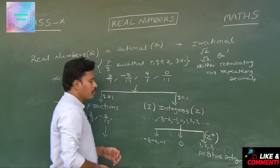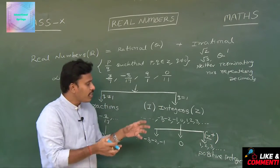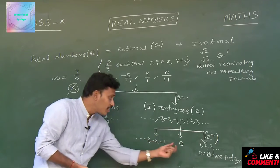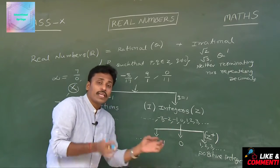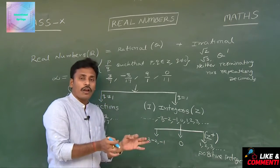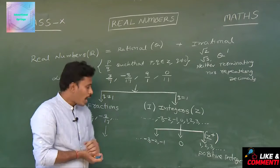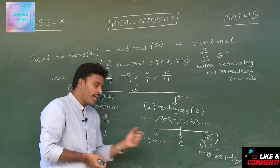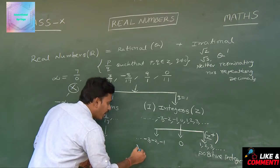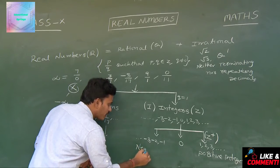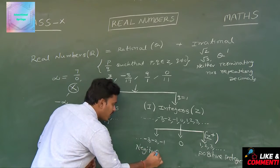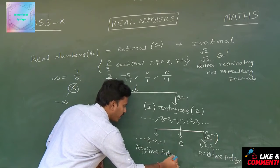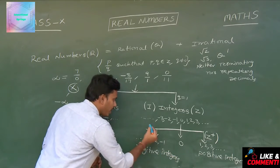Z plus is the collection of positive numbers. This 0 is neither positive nor negative. Whereas minus 3, minus 2, minus 1 are negative integers, denoted by the letter Z minus.